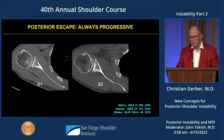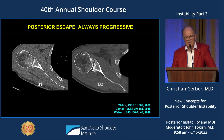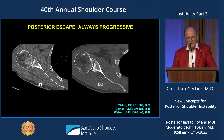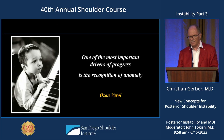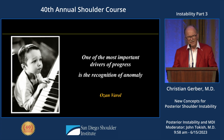What do we know? We know that static posterior subluxation is progressive — it is always progressive, and it leads to eccentric osteoarthritis. Very important to remember. Now, what is it all about? We don't understand why posterior escape happens.